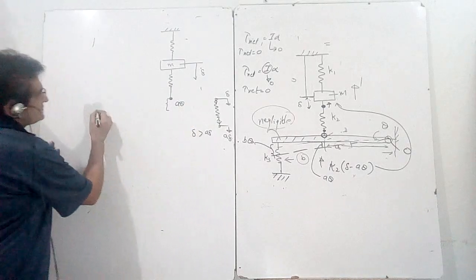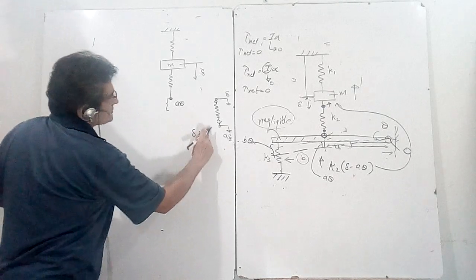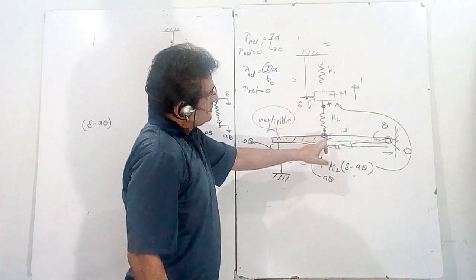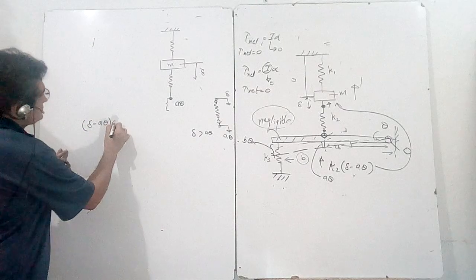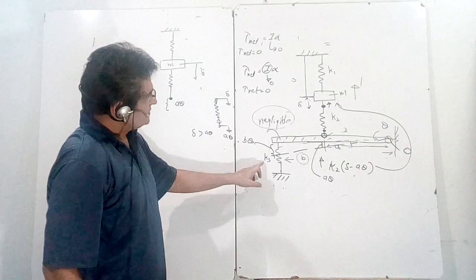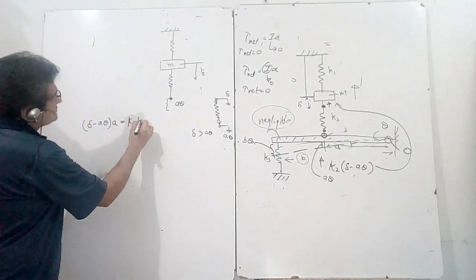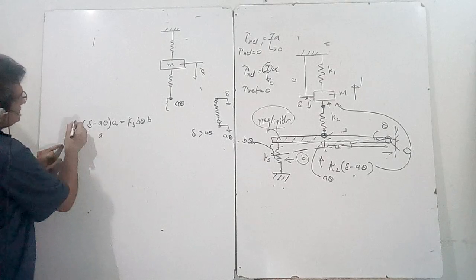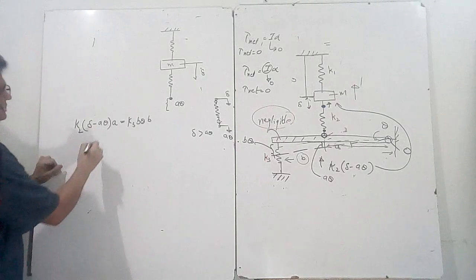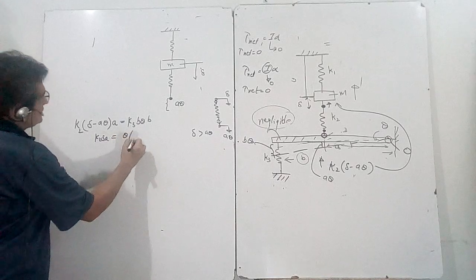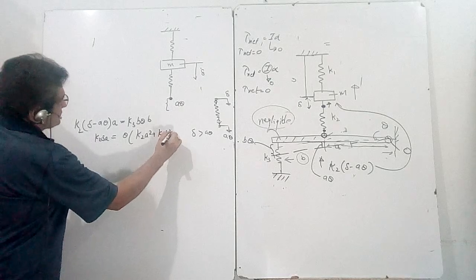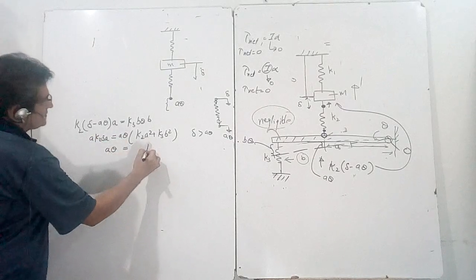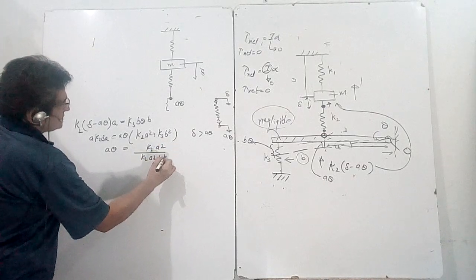For net torque to be zero, this spring must provide torque downward to balance k3·b·theta upward. The spring is compressed when delta is greater than a·theta. So the force from this spring is k2·(delta − a·theta), and the torque is k2·(delta − a·theta)·a. Setting equal to k3·b·theta·b: k2·a·(delta − a·theta) = k3·b²·theta. Rearranging: k2·a·delta = theta·(k2·a² + k3·b²), so a·theta = k2·a²·delta / (k2·a² + k3·b²).